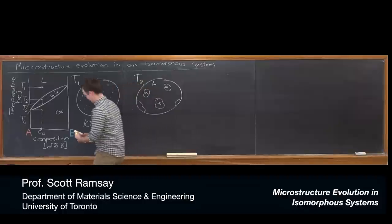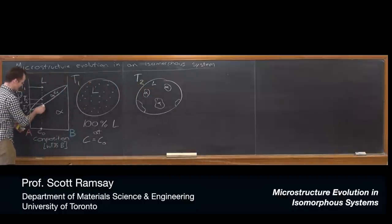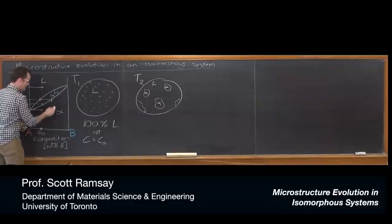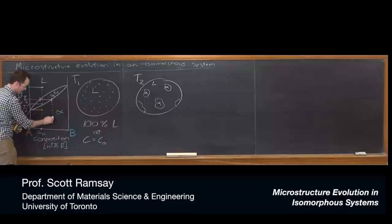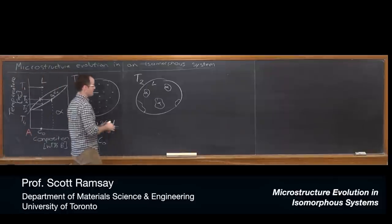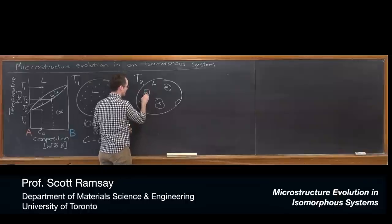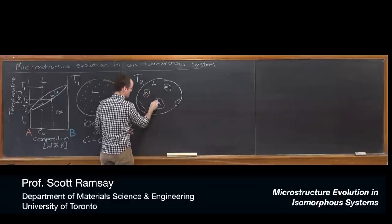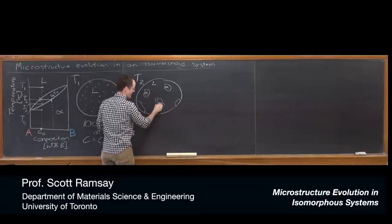But then when I start to solidify, I can go ahead and I can draw a tie line, and that's going to give me the composition of the solid that's existing at this temperature. And you can see, well, the composition of that first solid to solidify is actually more towards the B. So that means I would need to draw more B atoms, more of the blue ones, into these solid alpha particles.